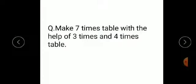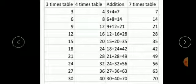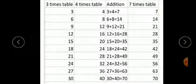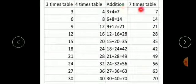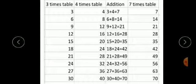Next example: make the 7 times table with the help of the 3 times and 4 times table. Here, 3 plus 4 equals 7. Again make 4 columns: the first column is the 3 times table, the second is the 4 times table, the third is addition, and the fourth is the 7 times table. Write the 3 times table in the first column and the 4 times table in the next. After adding these two tables we get the 7 times table.